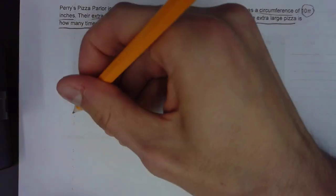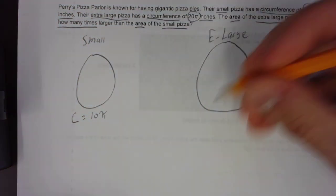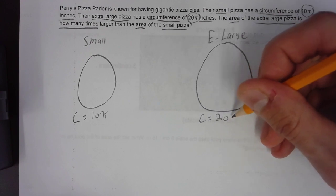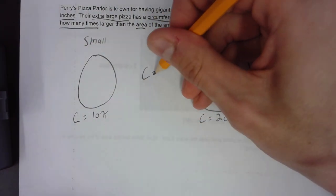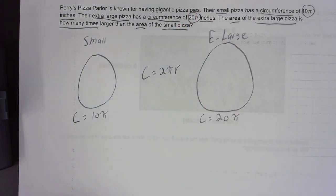We know that the circumference on this pizza is 10π, and the circumference on this pizza is 20π. As we know, circumference equals 2πr. R stands for radius.